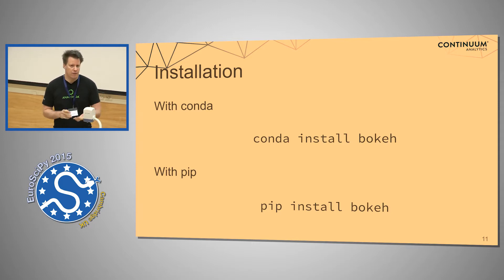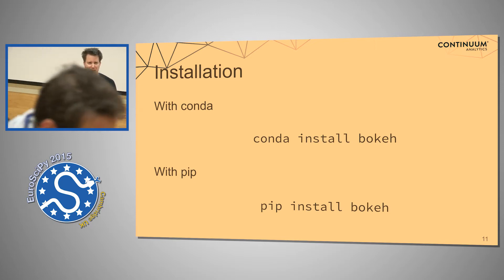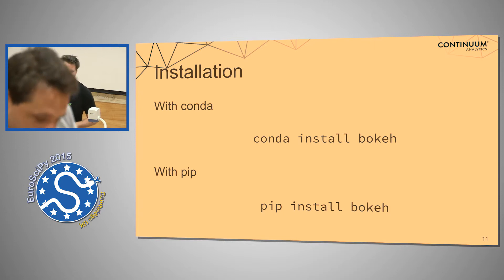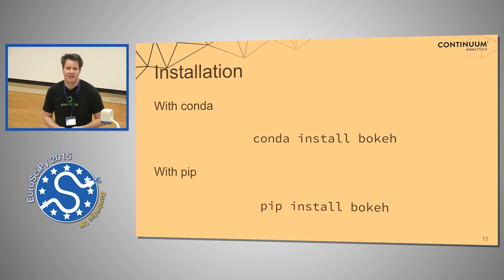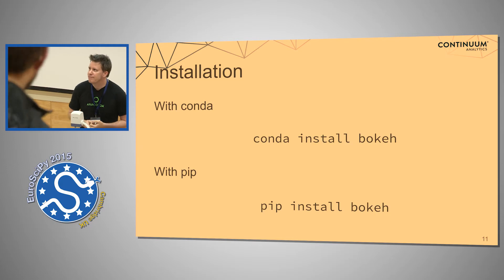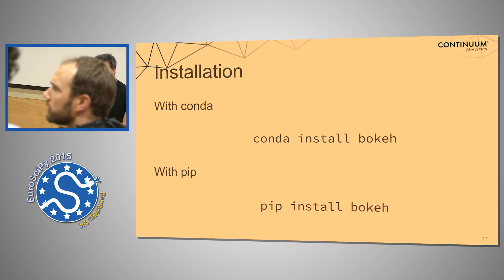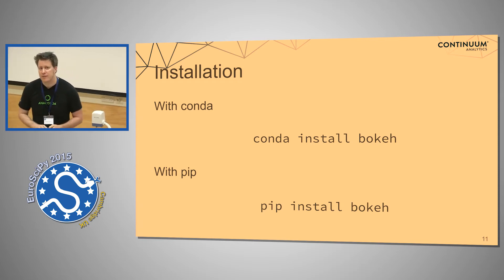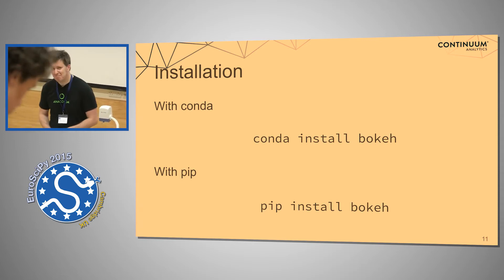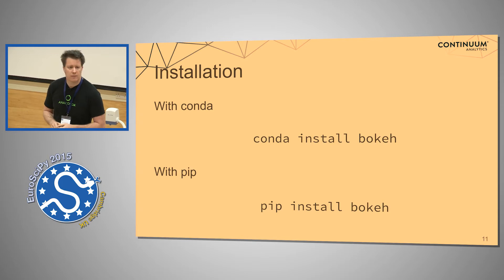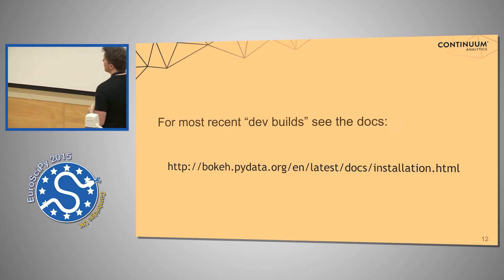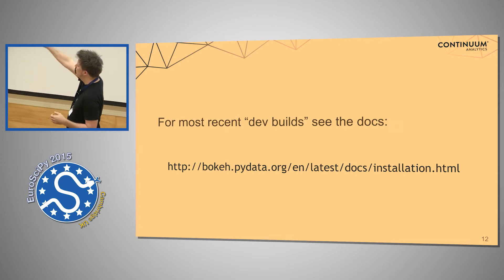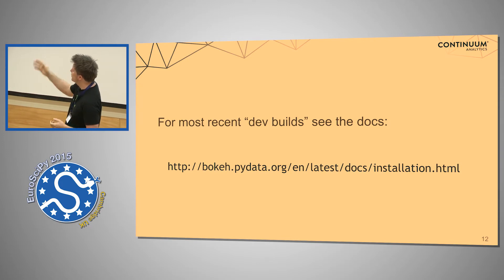The nice thing about virtual environments or conda environments is that you can put things in their own environment and not worry about it. Also, for dev builds, if you want the bleeding edge latest, you can go to our pydata.org doc site — there are installation instructions for dev builds. We actually released a release candidate just yesterday: Damien Avila put together RC1 for 0.9.3, which should be released in just a couple of days. We try to make a dev build every few weeks.